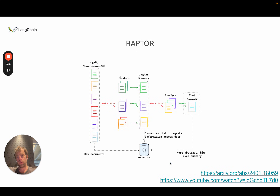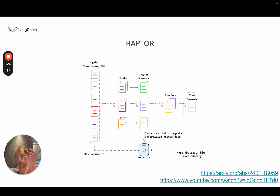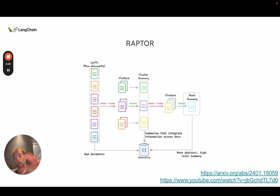The high-level intuition is this: some questions require very detailed information from a corpus to answer, pertaining to a single document or single chunk — we can call those low-level questions. Some questions require consolidation across broad swaths of a document, across many documents or many chunks, and you can call those higher-level questions.